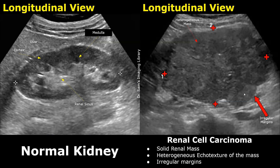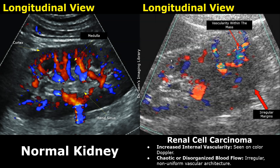This mass is quite large. It has heterogeneous areas and irregular margins, which are concerning. A malignant mass will show prominent internal vascularity on color Doppler. This is the mass in the lower pole of the kidney — it has disrupted the renal sinus and has also grown outwards. It has an irregular shape and margins.